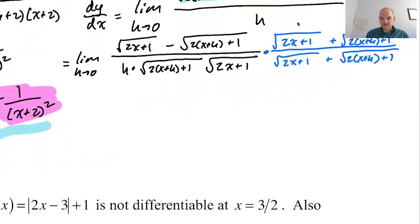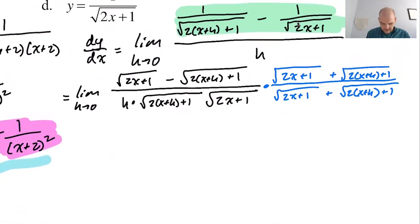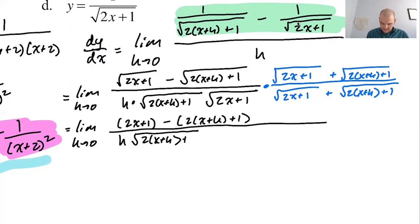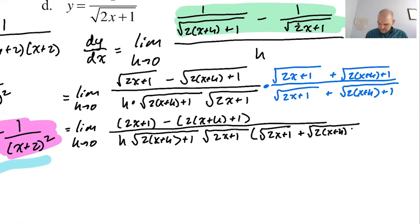This is really similar to the previous problem. I get the first thing squared — the quantity 2x plus 1 — and then minus the second thing squared — the quantity 2 times the quantity x plus h plus 1 — all over a very long denominator. So h, then radical 2x plus h plus 1, radical 2x plus 1, times the quantity radical 2x plus 1 plus radical 2 times the quantity x plus h plus 1.